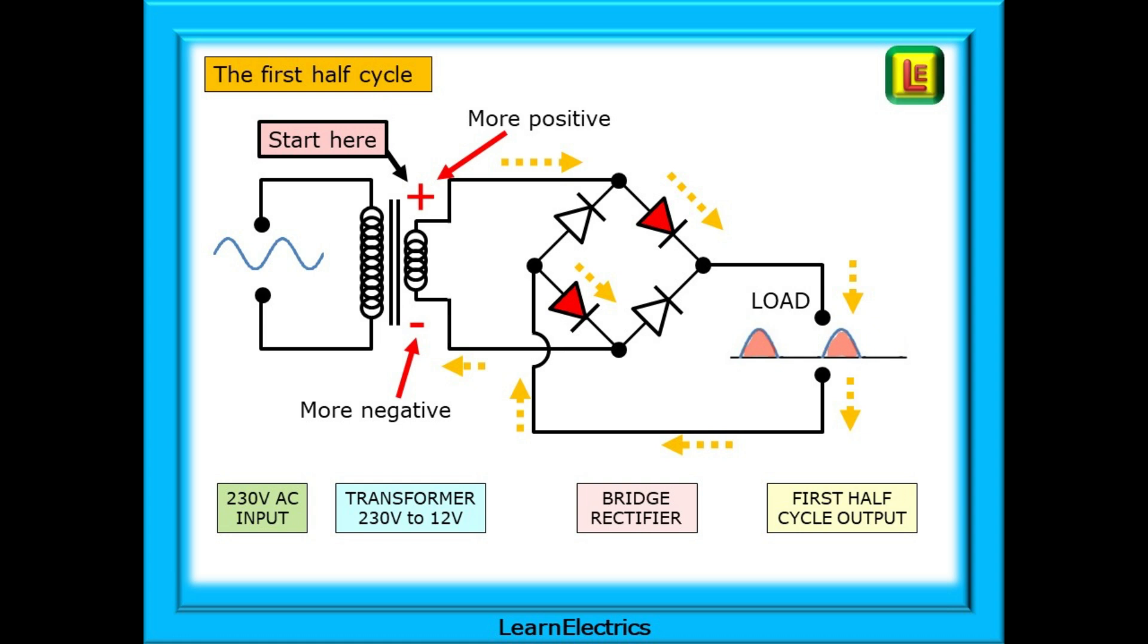Let's look at how we achieve DC voltages from alternating current inputs. This drawing shows a bridge rectifier, four diodes, producing, for now, a half cycle output. We have an AC input at 230 volts that passes into a transformer. This is a step-down transformer, so the output is lower than the input, 12 volts in our case.